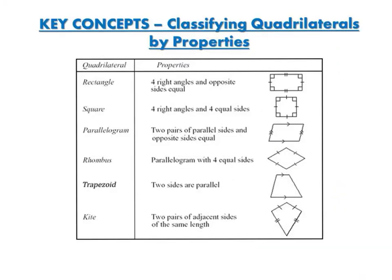First we're going to look at classifying quadrilaterals by properties, starting with a rectangle. A rectangle has four right angles and opposite sides of equal length — these two sides would be the same length, and those two sides would be the same length, but they would not necessarily all be the same. A square also has four right angles, and all four sides are the same length.